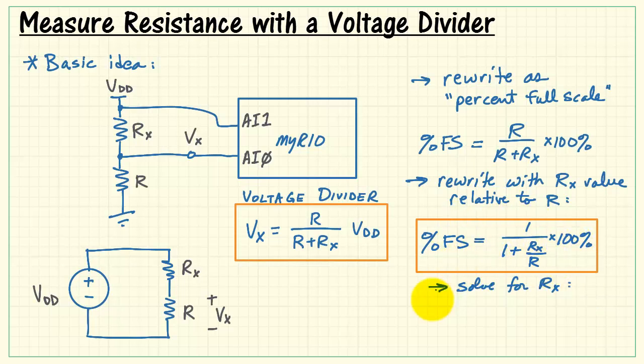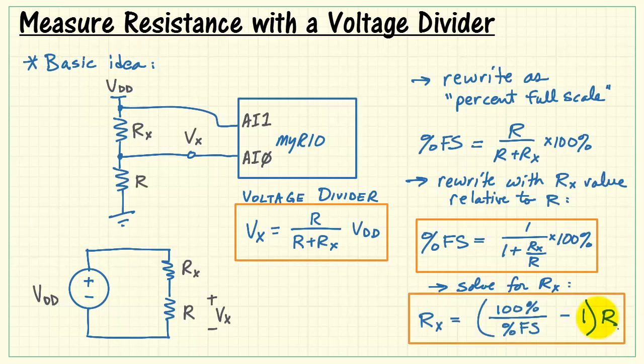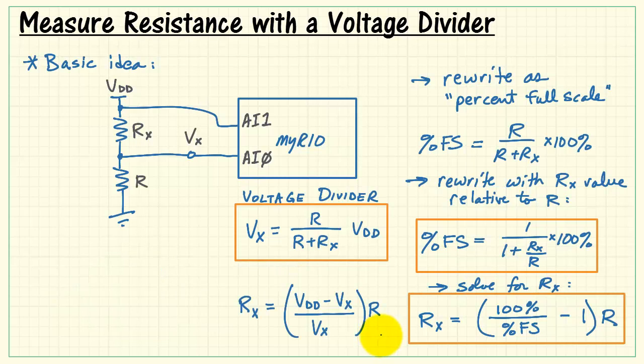Now if you apply some algebra, you can solve for Rx, and you end up with this result. This works when you measure the actual percent full-scale and you want to recover the resistance. I can do the same thing by solving the voltage divider expression for Rx. In either case, MyRio will calculate Rx based on the measured value of Vx, our previously measured value of R, and assuming we're taking a measurement of VDD, we put that into the equation as well.